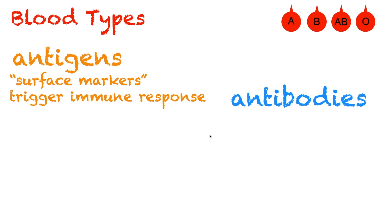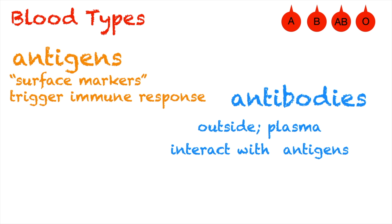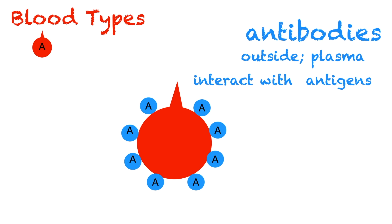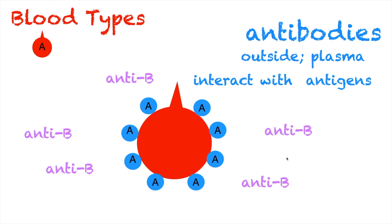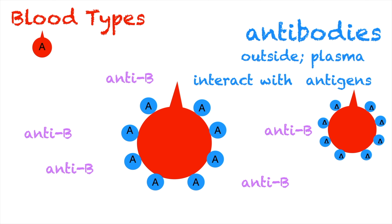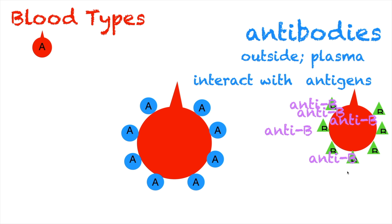For antigens to trigger an immune response, they have to interact with antibodies. In contrast with antigens, antibodies are found outside the red blood cell — they are found within the plasma — and their primary action is to interact with an opposite antigen to trigger an immune response. Starting with type A blood: if we have an A antigen on our red blood cell, our antibodies are anti-B antibodies. So if a type A person gets type A blood, there will be no reaction, because these antibodies will only react to B antigens. But if this person gets blood type B, these anti-B antibodies will interact with the B antigens and destroy them. This is the transfusion reaction that people experience when they receive an incompatible blood type.